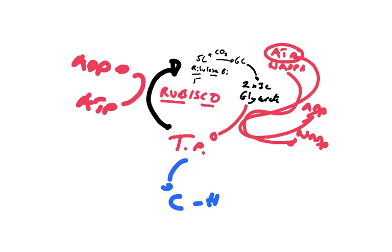It captures one carbon per rotation. So theoretically, this would have to rotate six times to make one glucose, because glucose has six carbons in it.